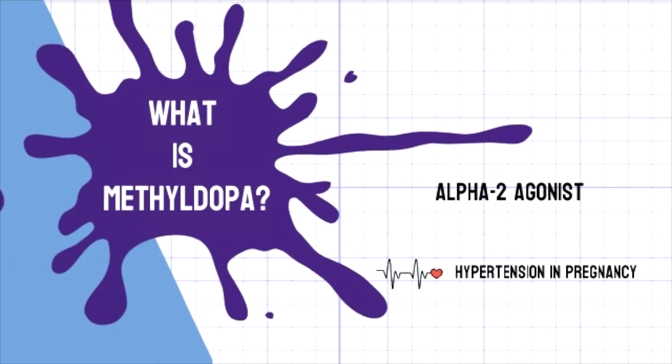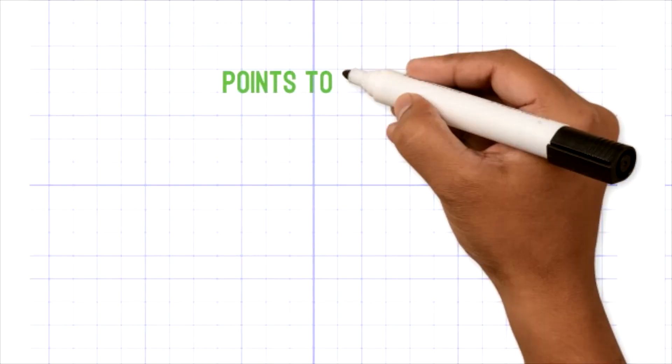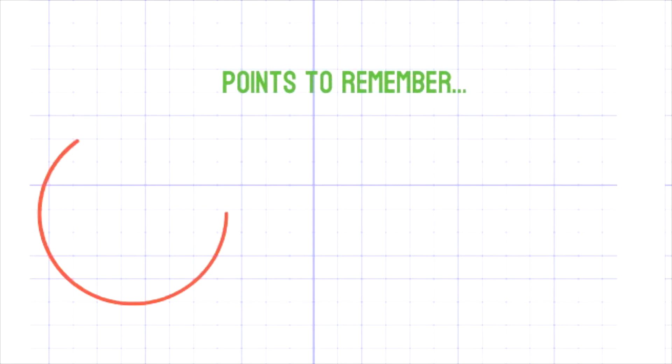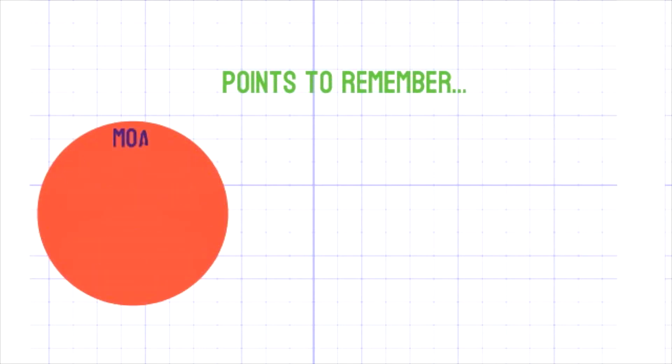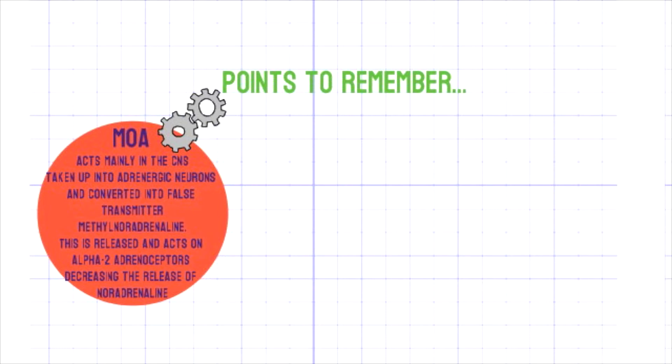Now we'll see some points about methyldopa. First, the mechanism of action: methyldopa mainly acts in the CNS, where it is taken up into adrenergic neurons and converted into a false transmitter, methyl noradrenaline. This is released and acts on alpha-2 adrenoreceptors, decreasing the release of noradrenaline.